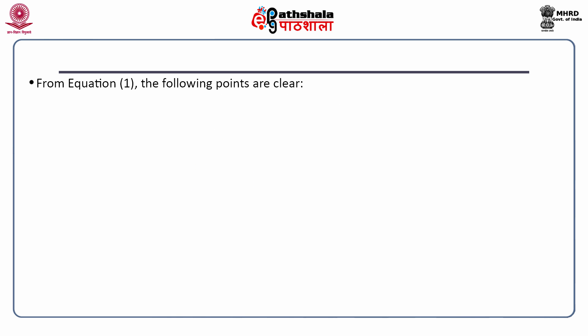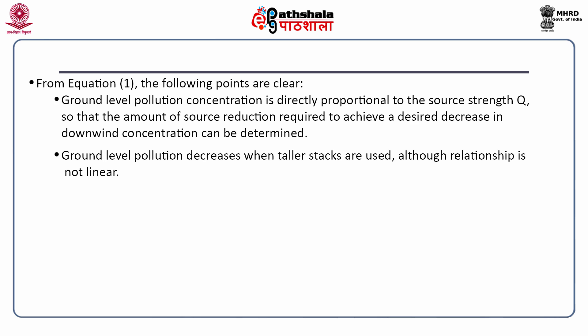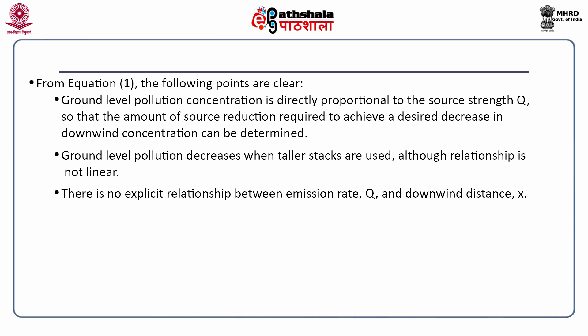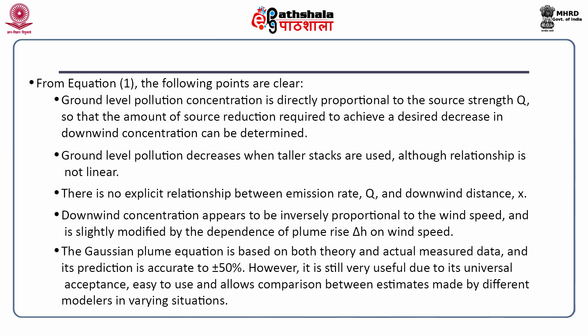The effective stack height includes the height of the stack plus the plume rise. U_h is the average wind speed at the effective height of the stack in meters per second. σ_y is the horizontal dispersion coefficient in meters, and σ_z is the vertical dispersion coefficient in meters. From equation 1, the following points are clear: ground level pollution concentration is directly proportional to the source strength Q, so that the amount of source reduction required to achieve a desired decrease in downwind concentration can be determined. Ground level pollution decreases when taller stacks are used, although the relationship is not linear. There is no explicit relationship between the emission rate Q and the downwind distance x. Downwind concentration appears to be inversely proportional to the wind speed. The Gaussian plume equation's prediction is accurate to plus or minus 50 percent.